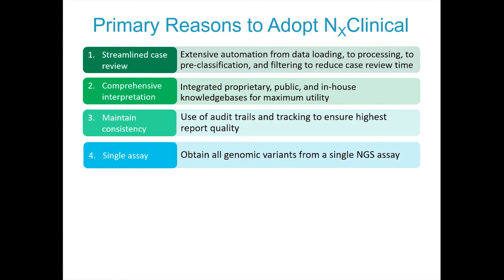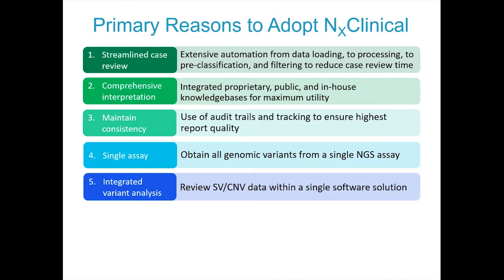With the release of NX Clinical 4.0 at ASHG last year, labs can now obtain CNVs, AOH, and sequence variants all from a single NGS assay, further reducing cost and turnaround time. The fifth point is the integrated analysis view, which saves time and money and improves quality because you don't have different pipelines for small structural variants, molecular, and CNVs — all the data is in one place. That's another key reason NX Clinical has been adopted by many labs.